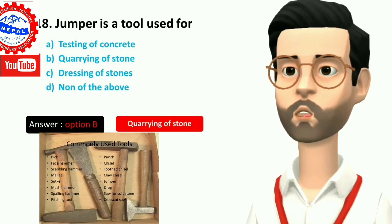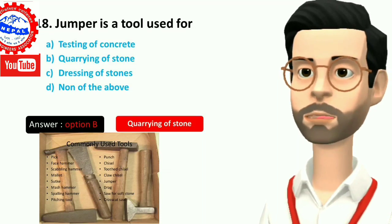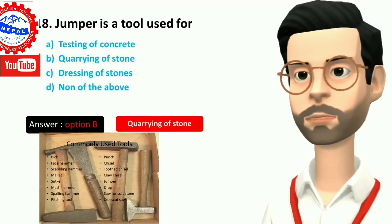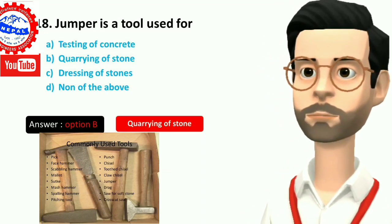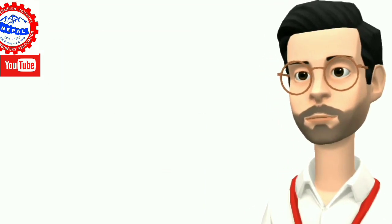Eighteen, jumper is a tool used for: A) testing of concrete, B) quarrying of stone, C) dressing of stones, D) none of the above. Answer is option B, quarrying of stone.